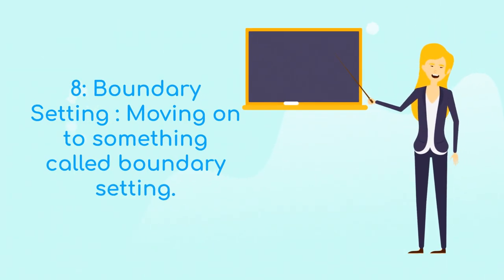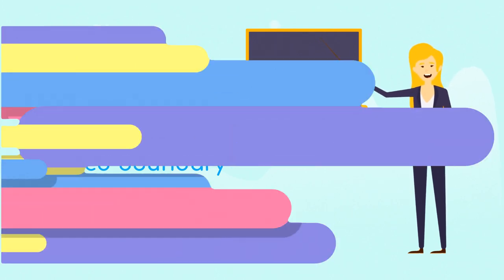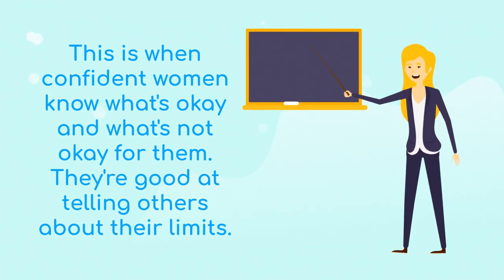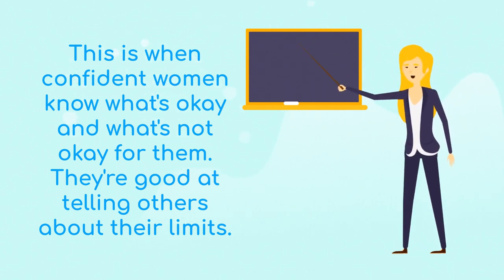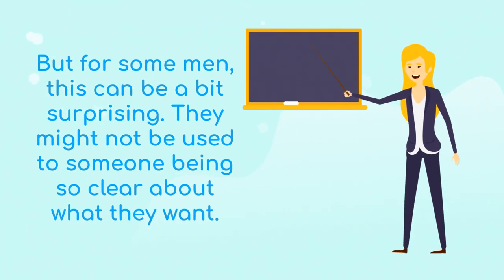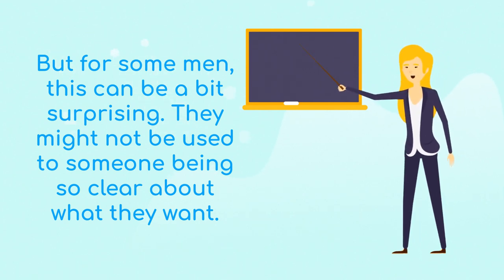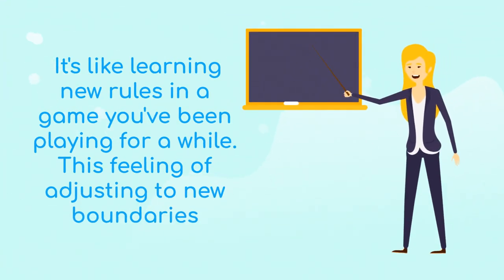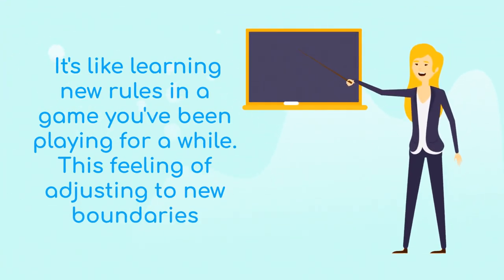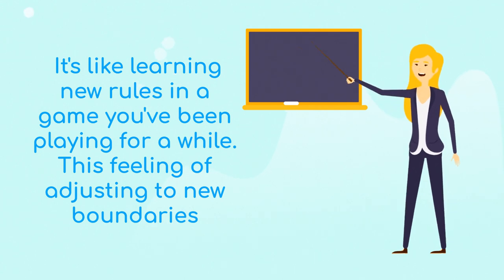Eighth, boundary setting. Moving on to something called boundary setting. This is when confident women know what's okay and what's not okay for them. They're good at telling others about their limits. But for some men, this can be a bit surprising - they might not be used to someone being so clear about what they want. It's like learning new rules in a game you've been playing for a while. These feelings of adjusting to new boundaries can sometimes make men feel a bit uneasy.